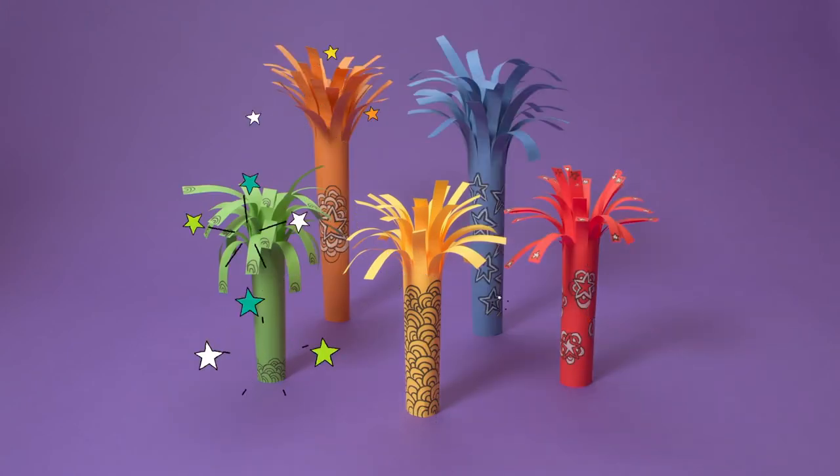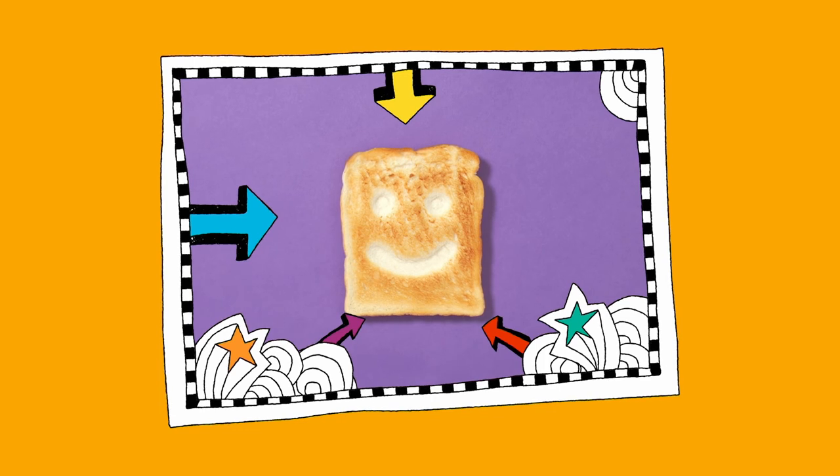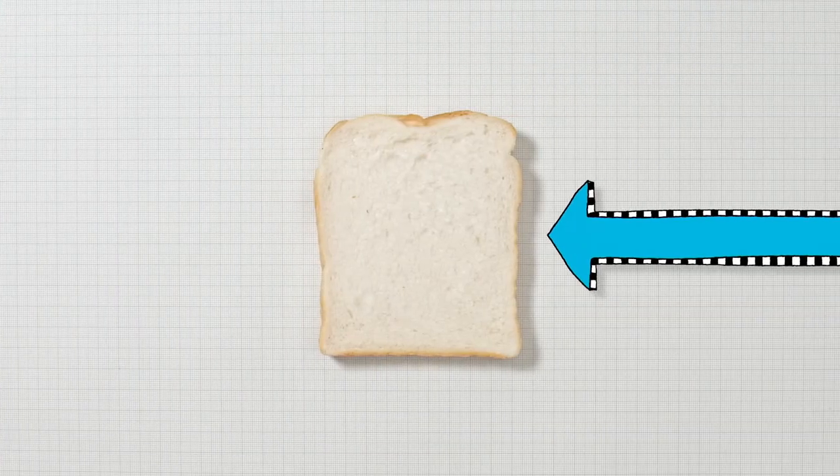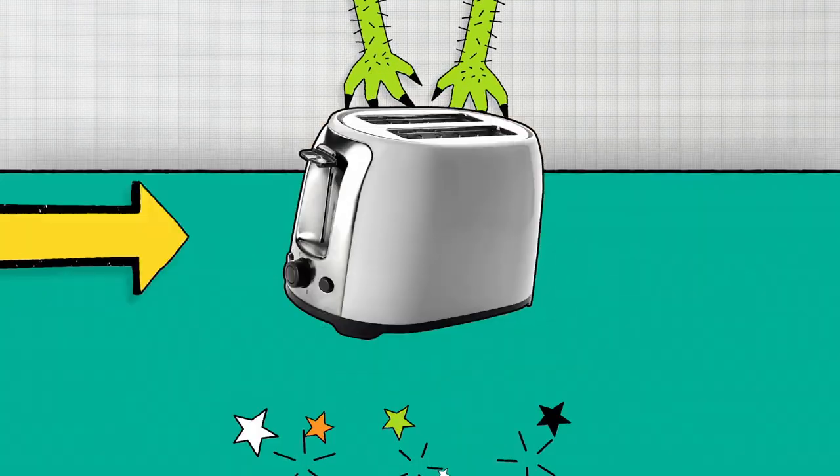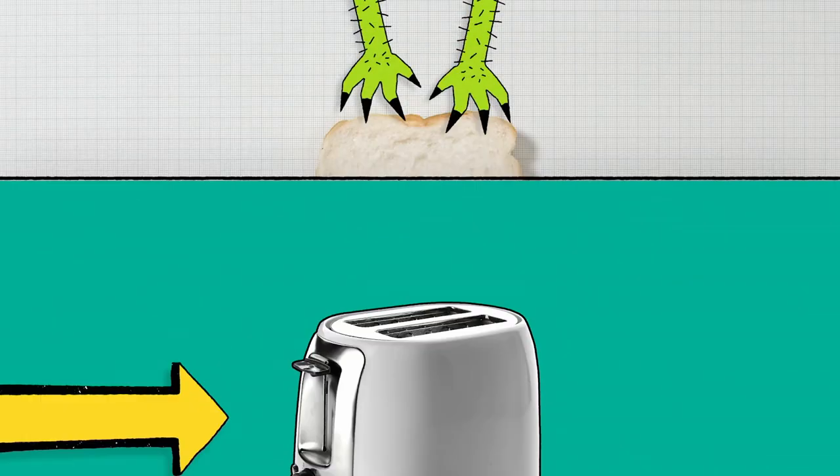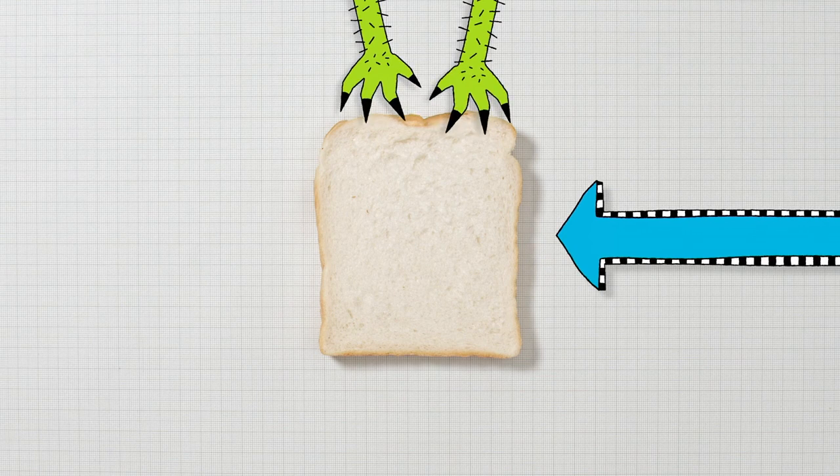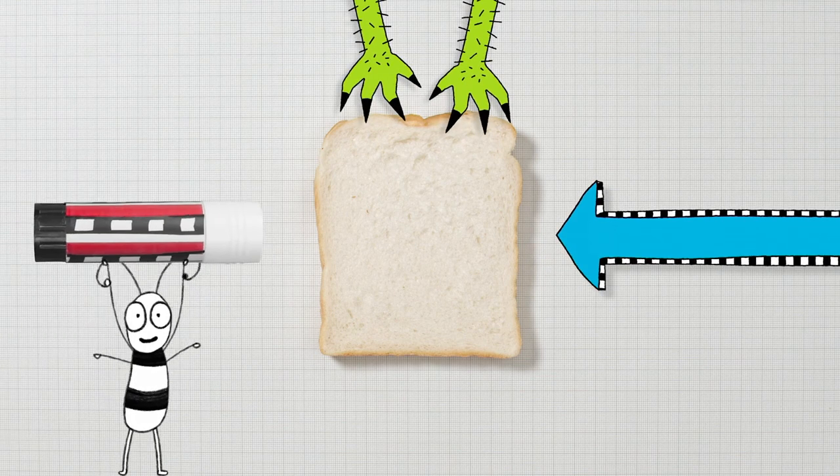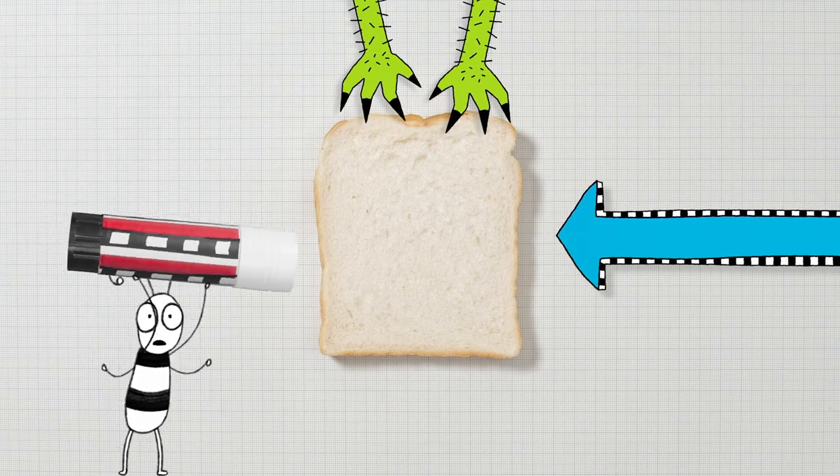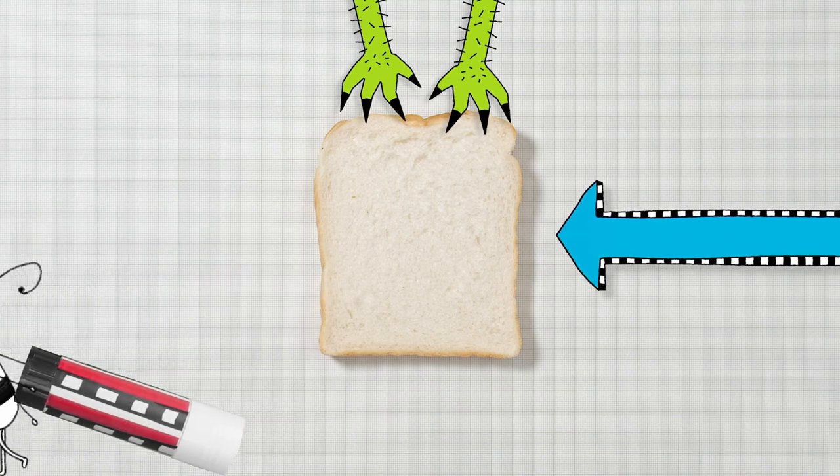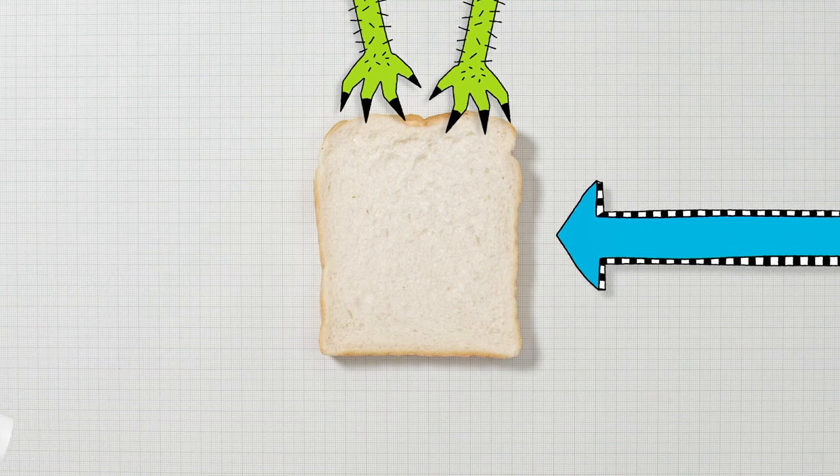A tasty toasted doodle. You will need a slice of bread, white works best, clean hands, and a toaster. Be careful with toasters. That's right, make sure you get an adult to help you. And a glue stick? Not for toast. Oh, alright. Sorry, maybe next time.